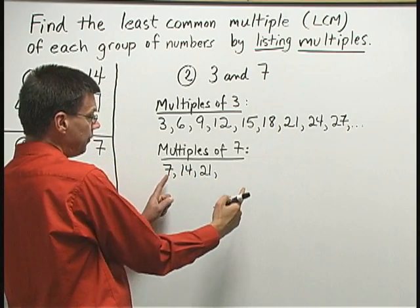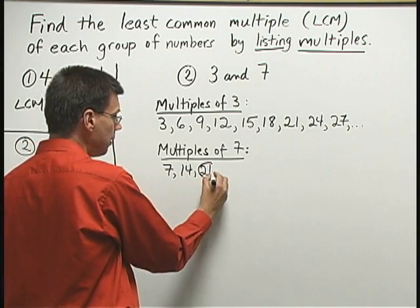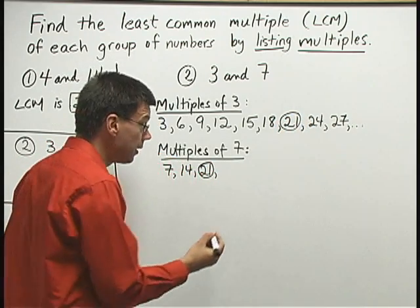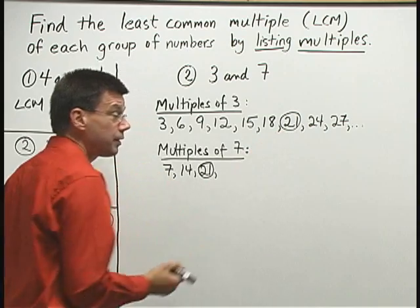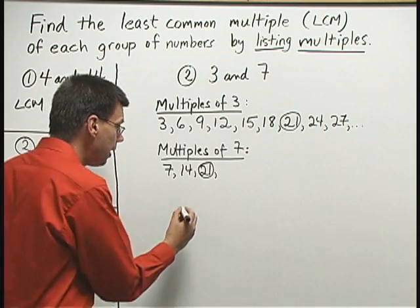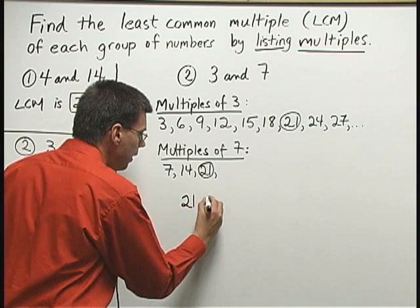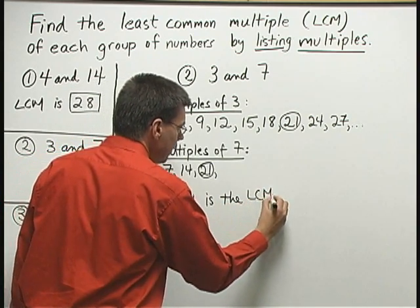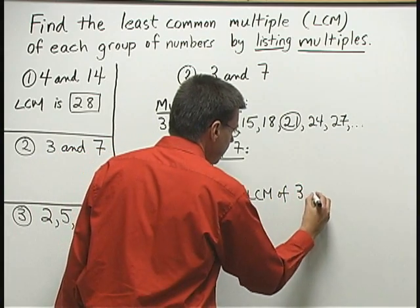14 doesn't. 7 doesn't. 21 is the smallest number that occurs on both lists. As soon as we see that smallest number on both lists, we can stop listing multiples. I know that 21 is the LCM of 3 and 7.